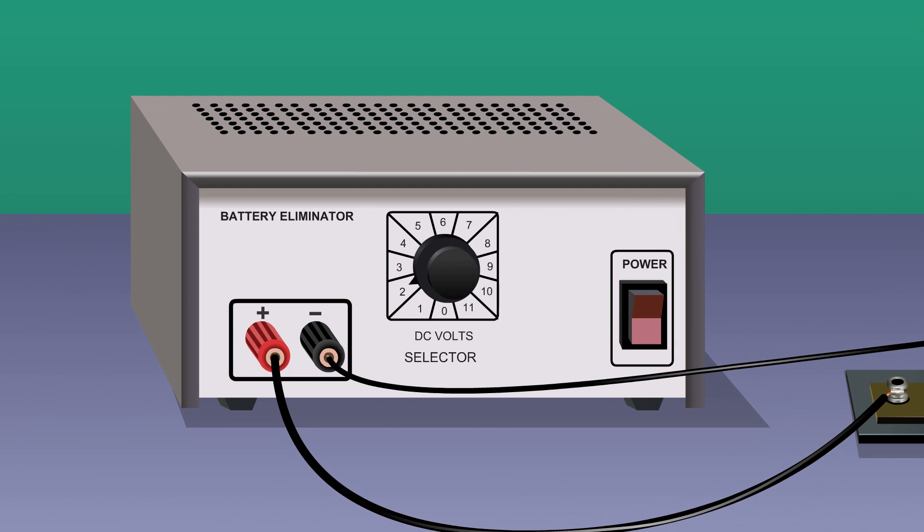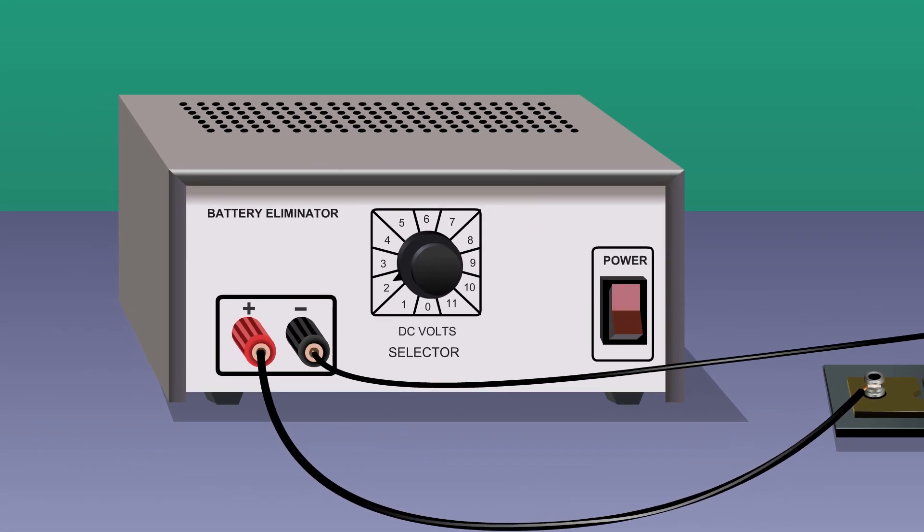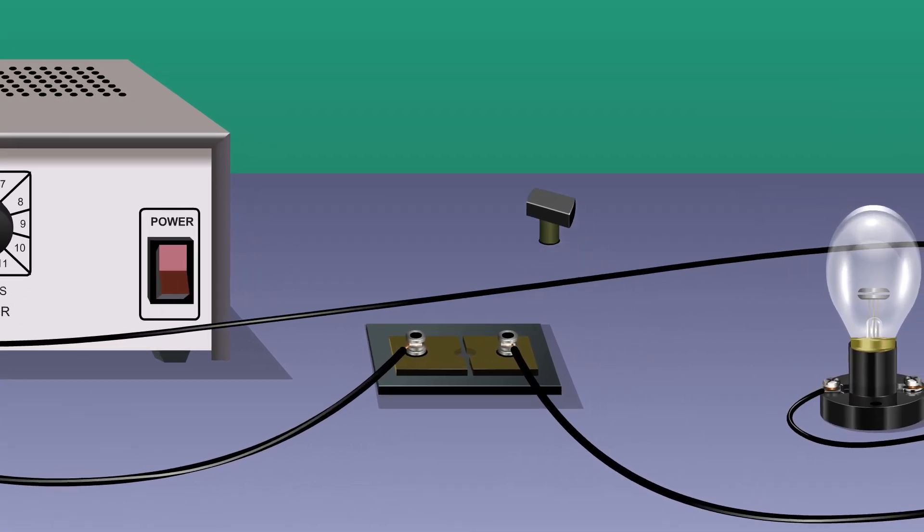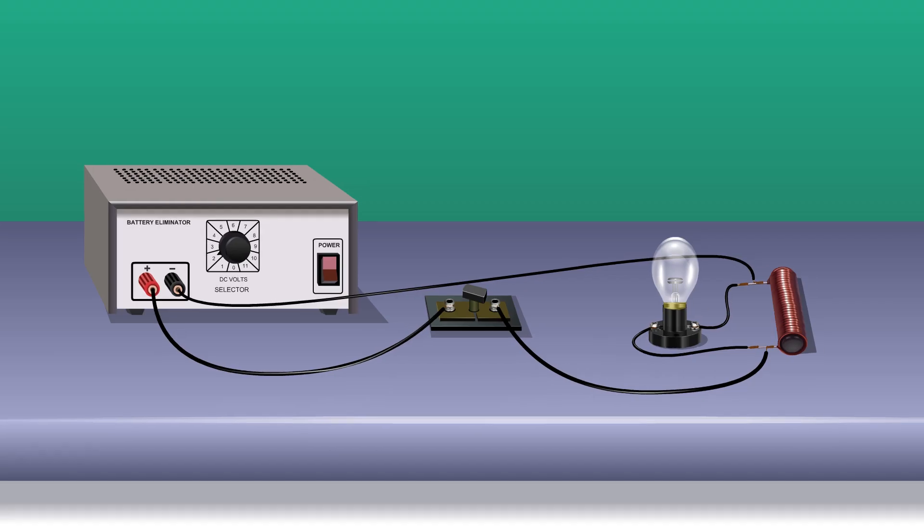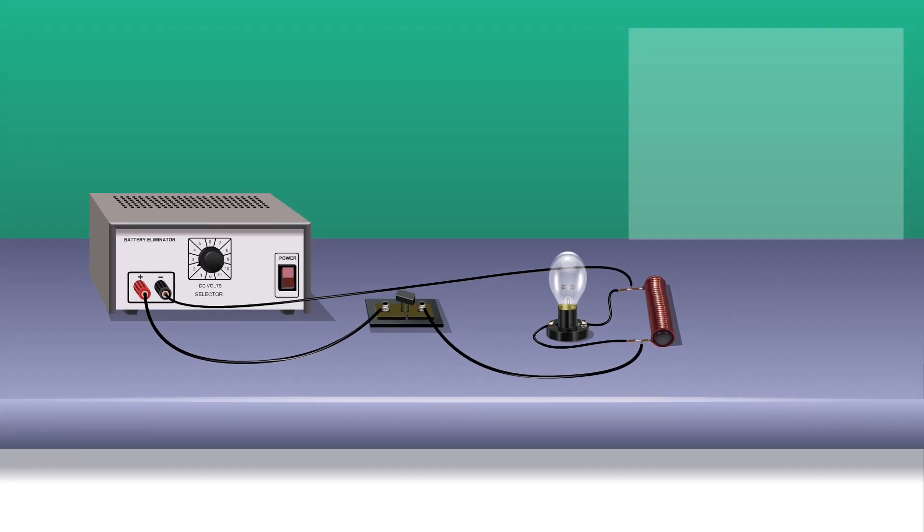Set the voltage of the battery eliminator to two or three volts. Switch on the battery eliminator. Close the one-way key. Observe if there is any change to the neon lamp.